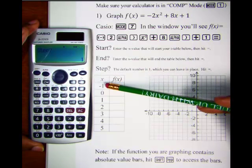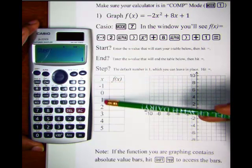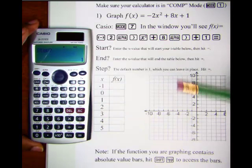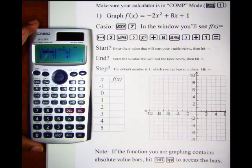It's simply asking in what increments would you like these numbers to fall and we want them all to be one unit apart. So we keep it at 1. Let's hit equals and there is our t-table.